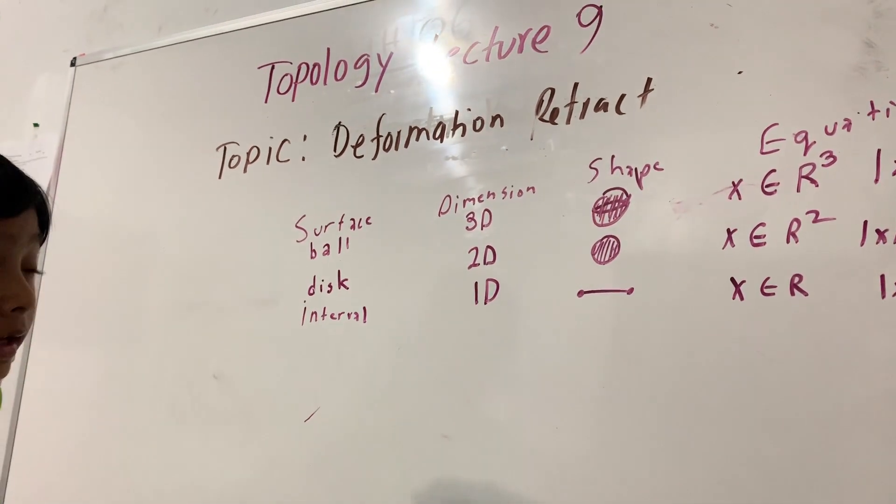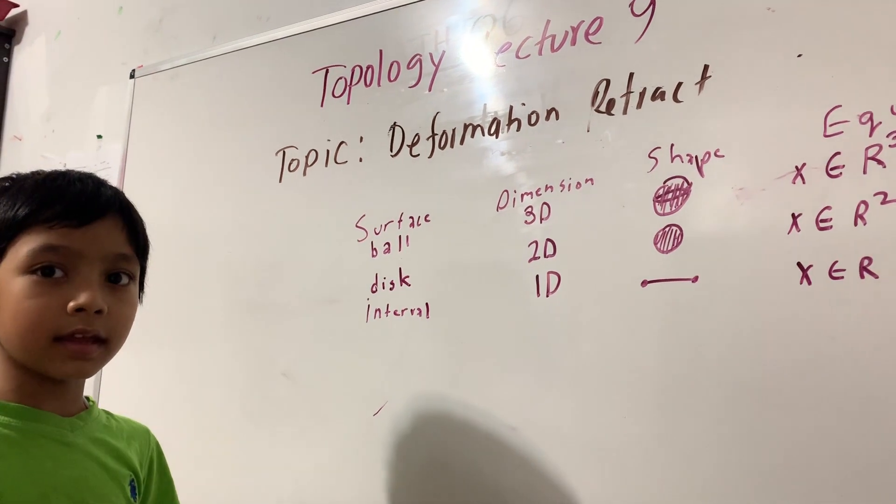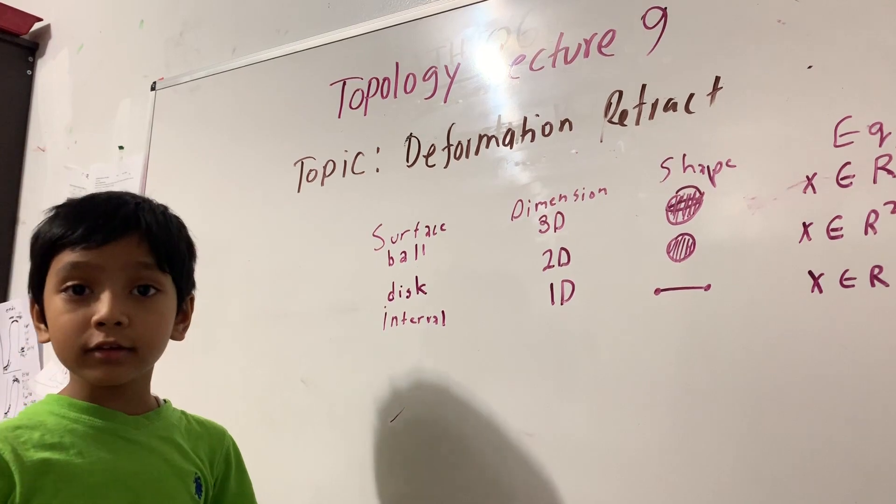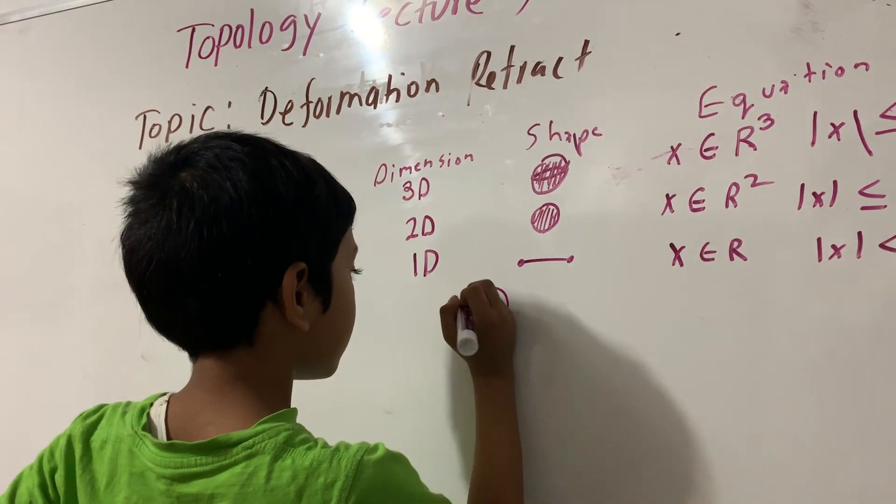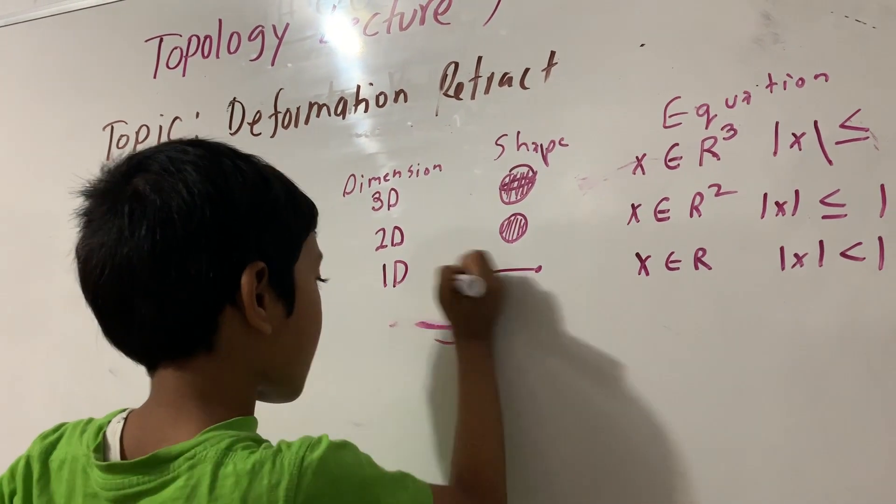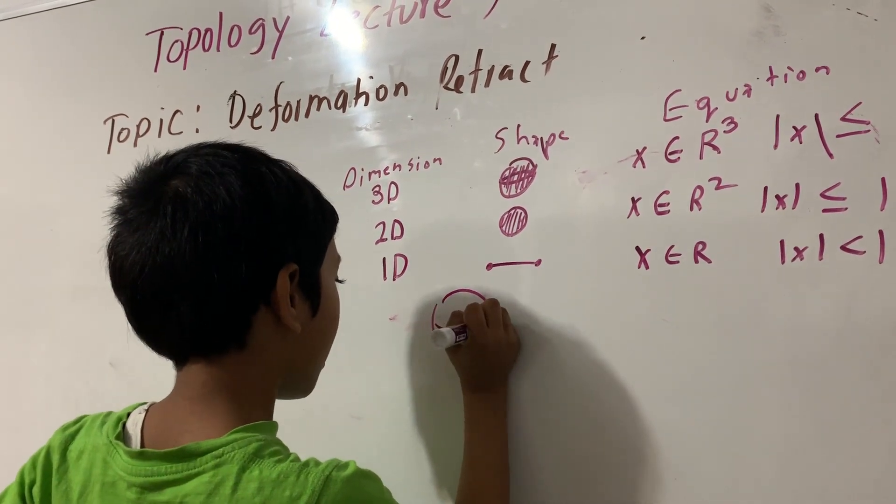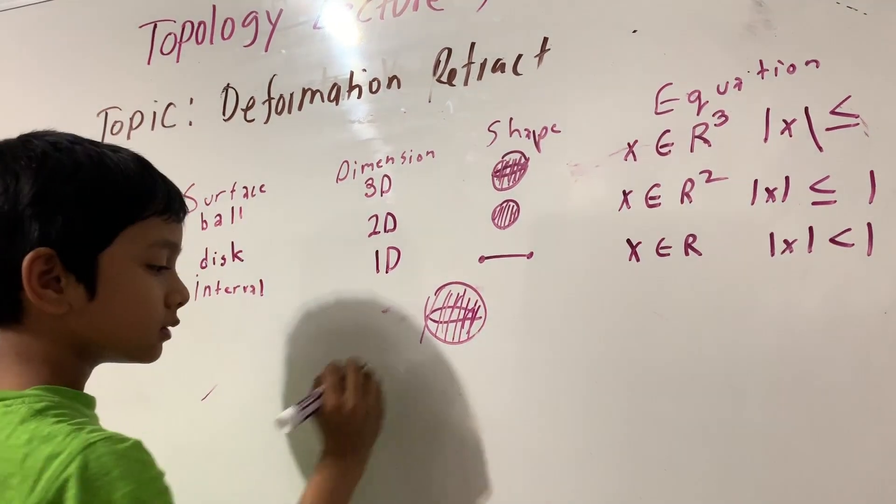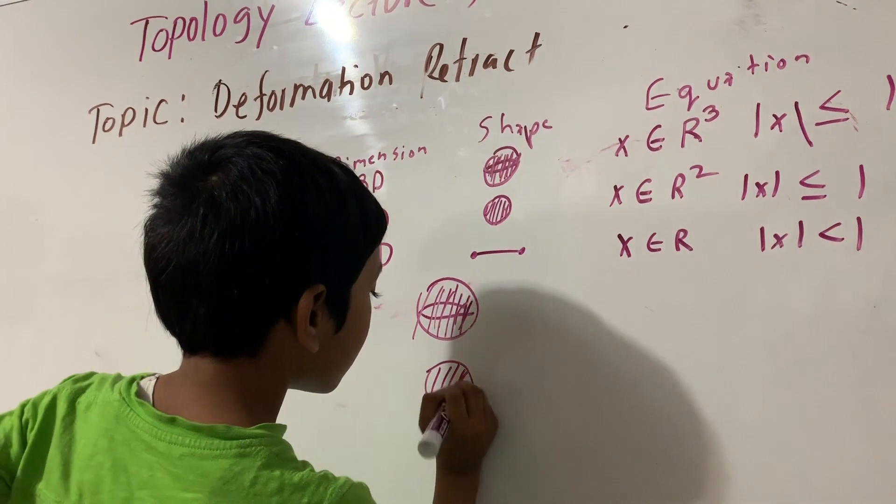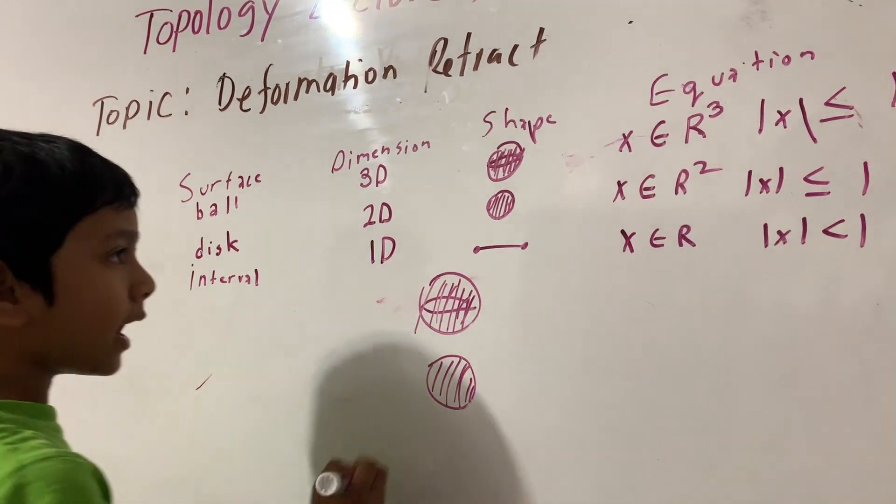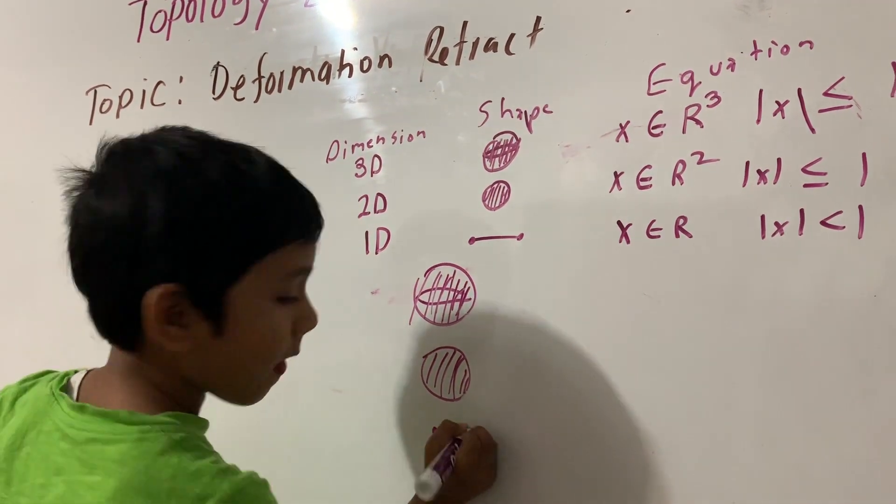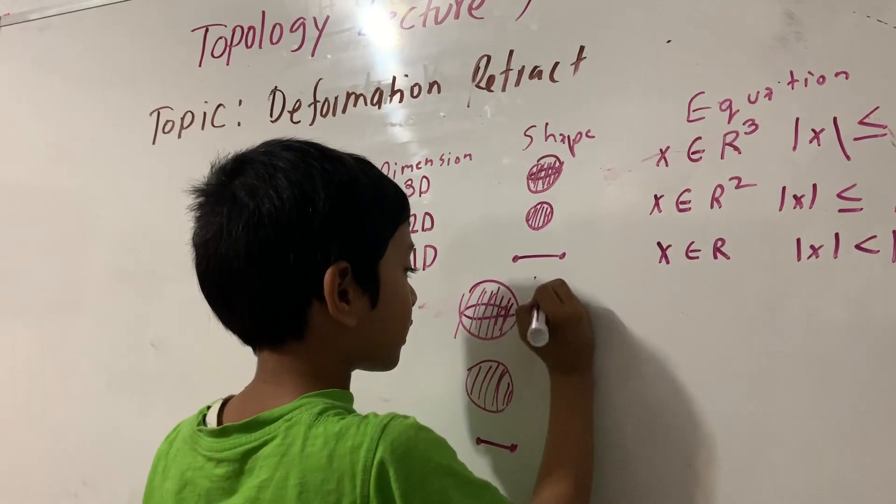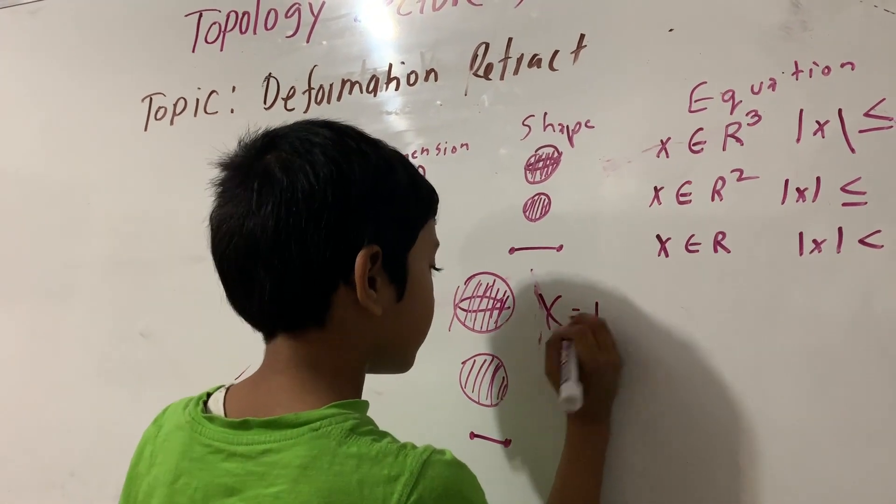Now, if you do the math, these three shapes all have the same Euler characteristics. So, this is a ball, a sphere with it inside, a disc, a circle with it inside, and line segment. The kind for all of them is 1.